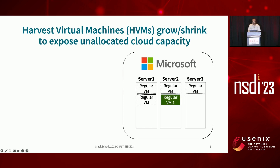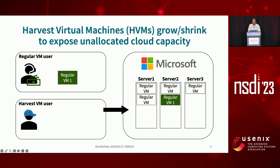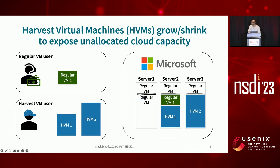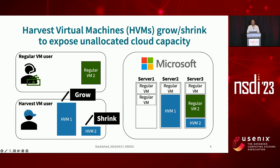Here I've shown a snapshot of servers in a data center with some regular high-priority or on-demand VMs allocated to the servers. When harvest VMs are requested, they're co-located with regular VMs and take up any unallocated resources on the servers. When new regular VMs are requested, harvest VMs shrink in their capacity to make room. And when regular VMs are terminated, harvest VMs can grow to take up the newly freed resources.